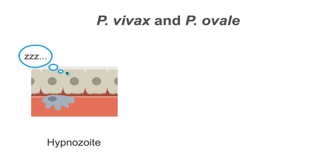With Plasmodium ovale and Plasmodium vivax, a small number of parasites remain dormant inside liver cells. We refer to these as hypnozoites, and they are found in virtually all patients with these two types. Therefore, in these two types, even if you treat and kill the active malaria in the red cells, you may not be able to kill this dormant form.